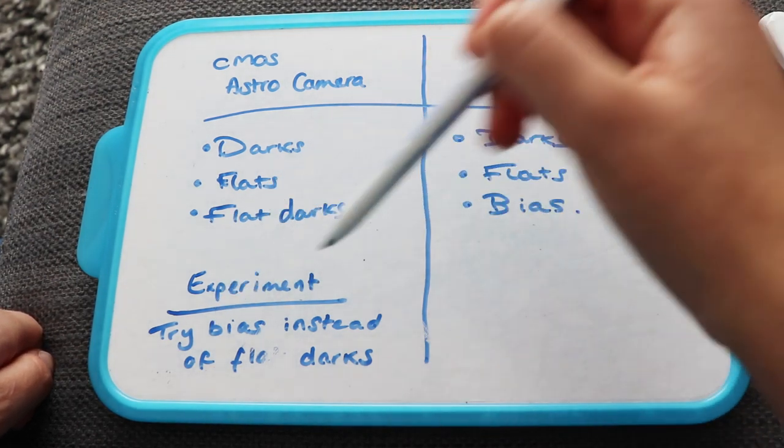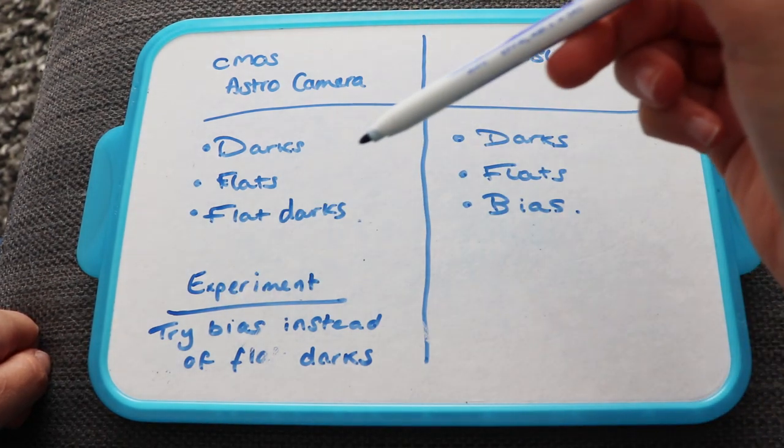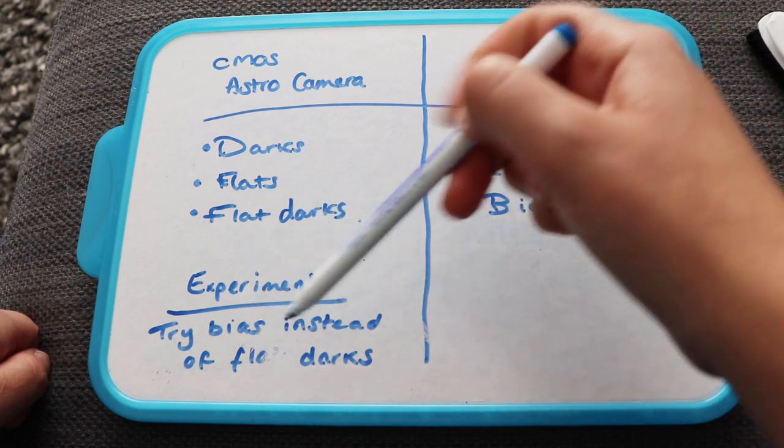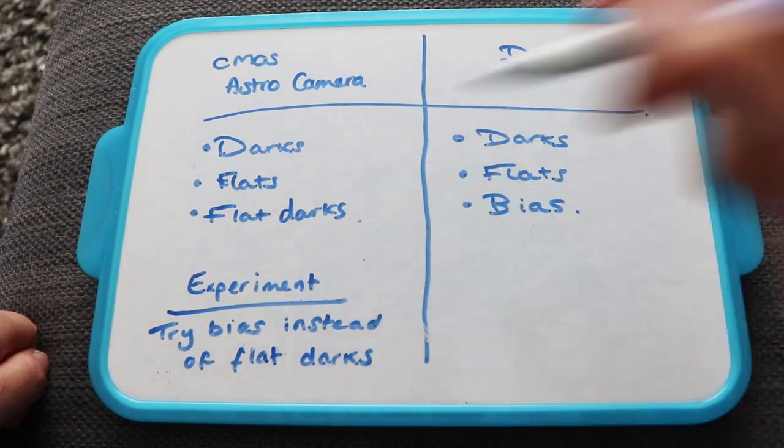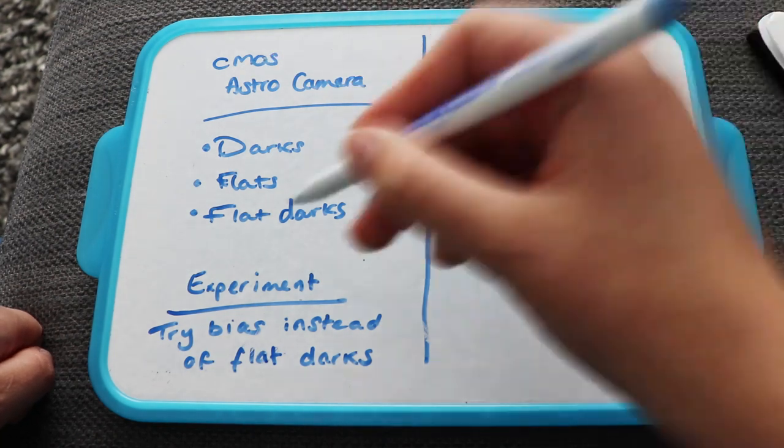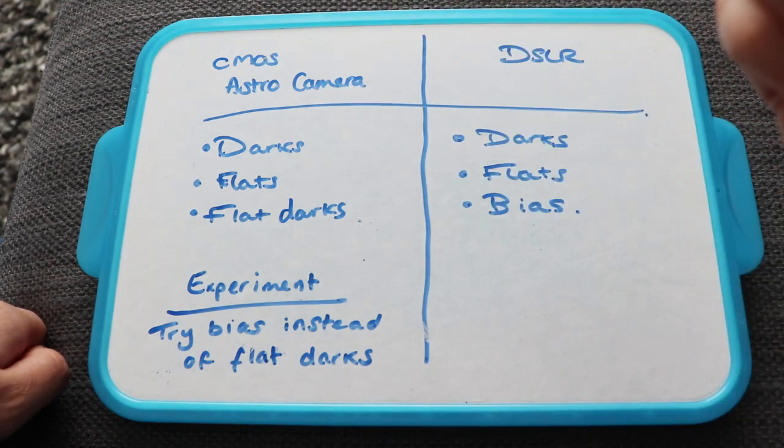You should always try and find what works best for your setup. So you could try bias instead of flat darks and vice versa. So try it out and see what works best for you.